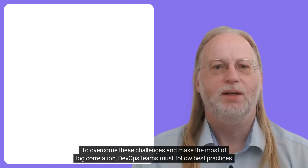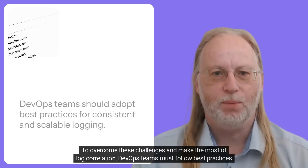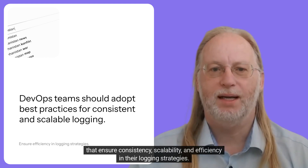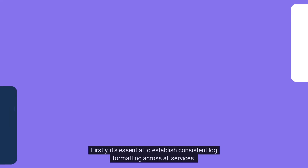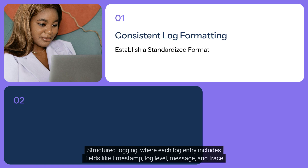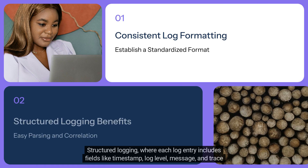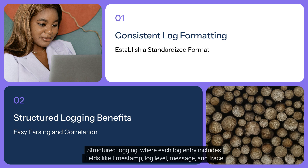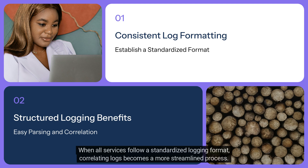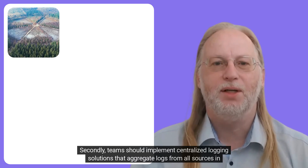To overcome these challenges and make the most of log correlation, DevOps teams must follow best practices that ensure consistency, scalability, and efficiency in their logging strategies. Firstly, it's essential to establish consistent log formatting across all services. Structured logging — where each log entry includes fields like timestamp, log level, message, and trace ID — enables easy parsing and correlation when all services follow a standardized logging format.